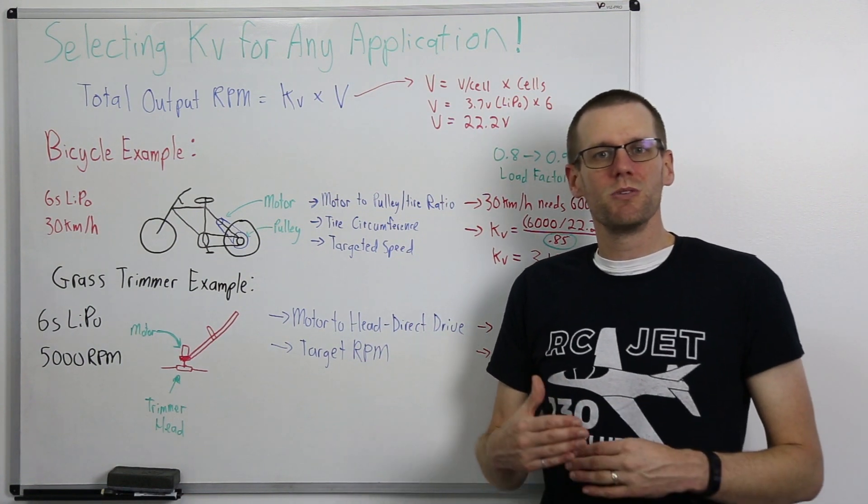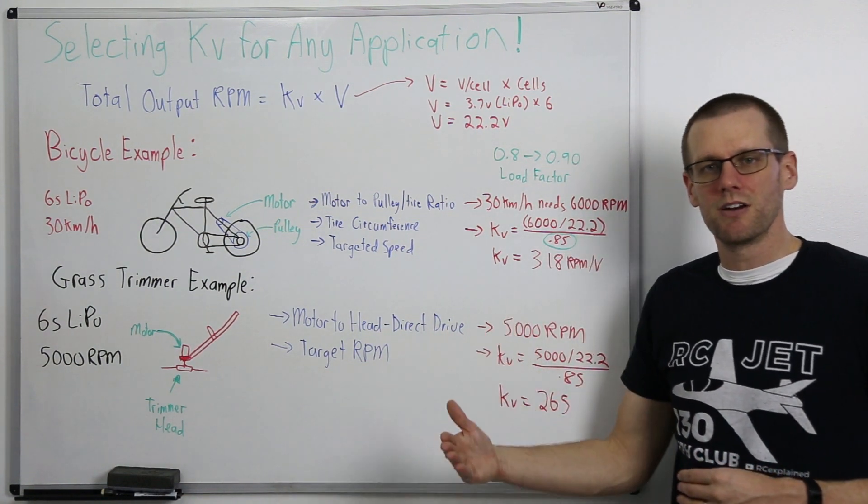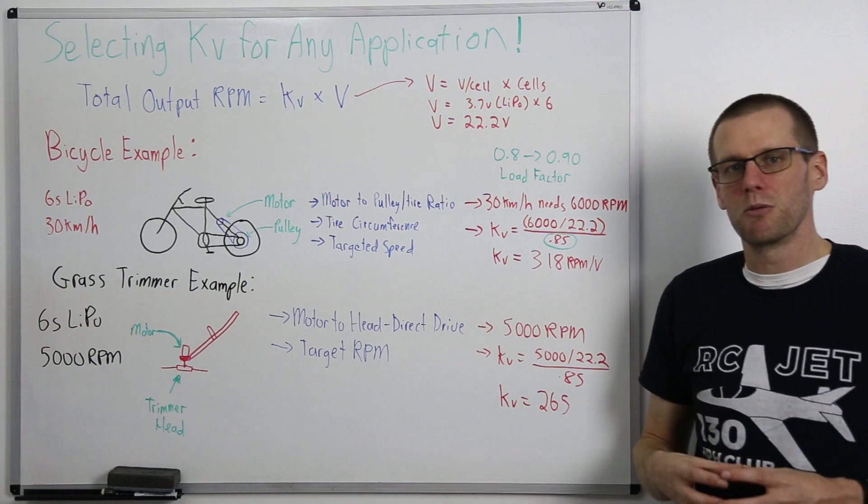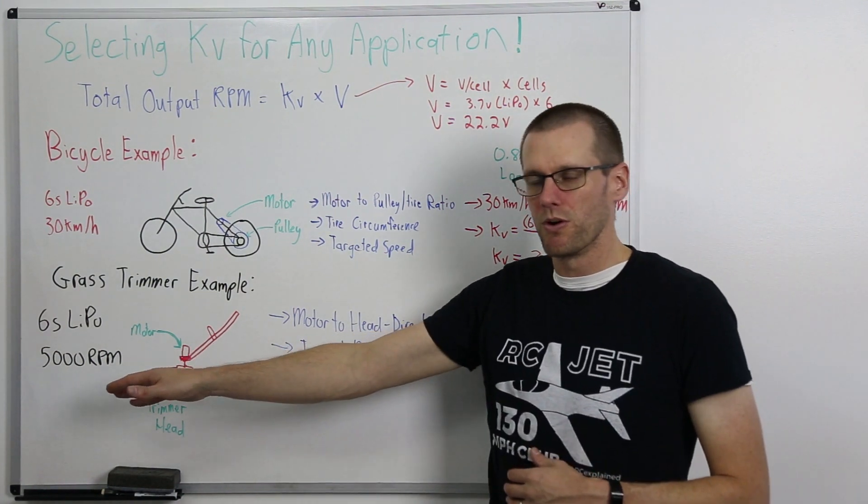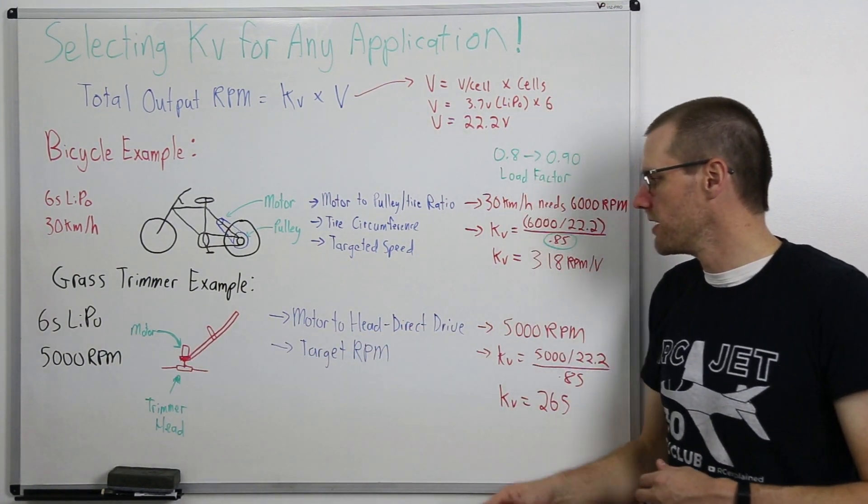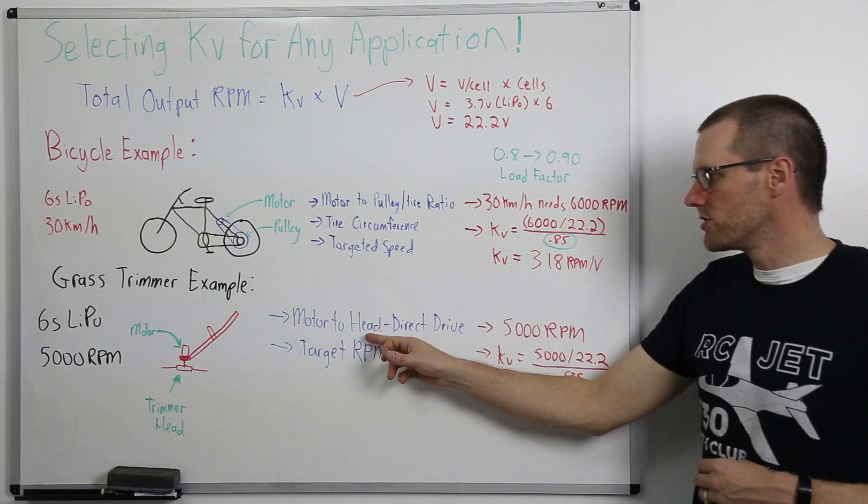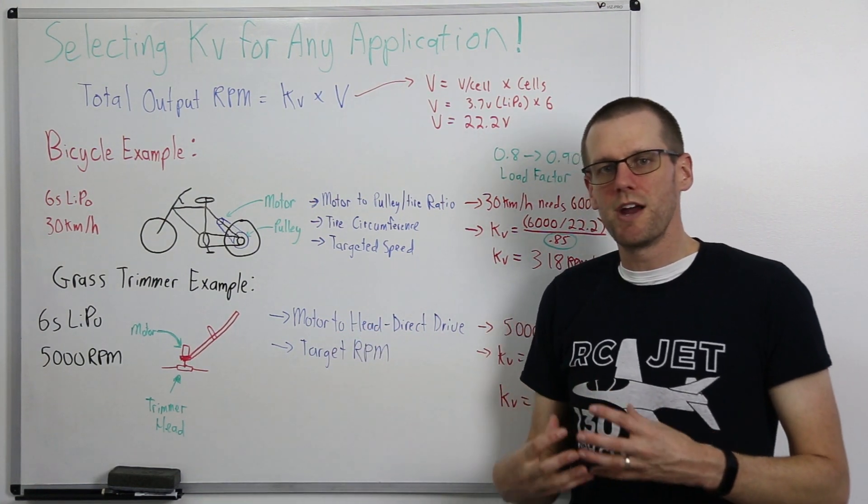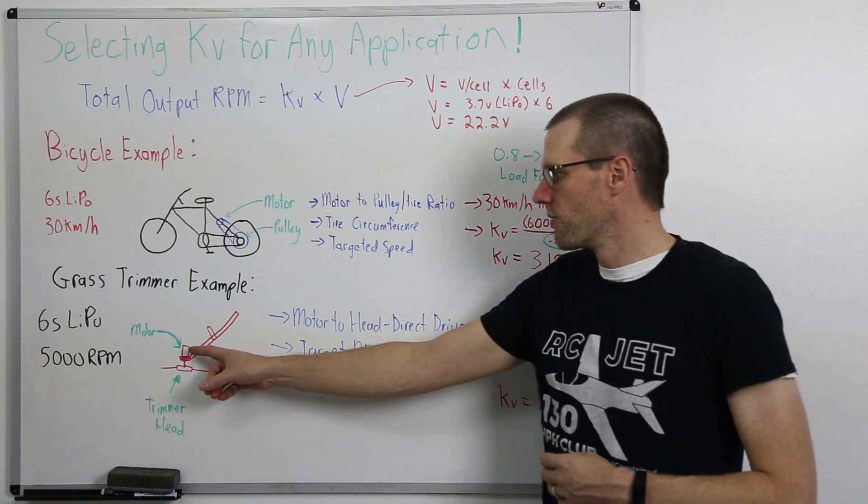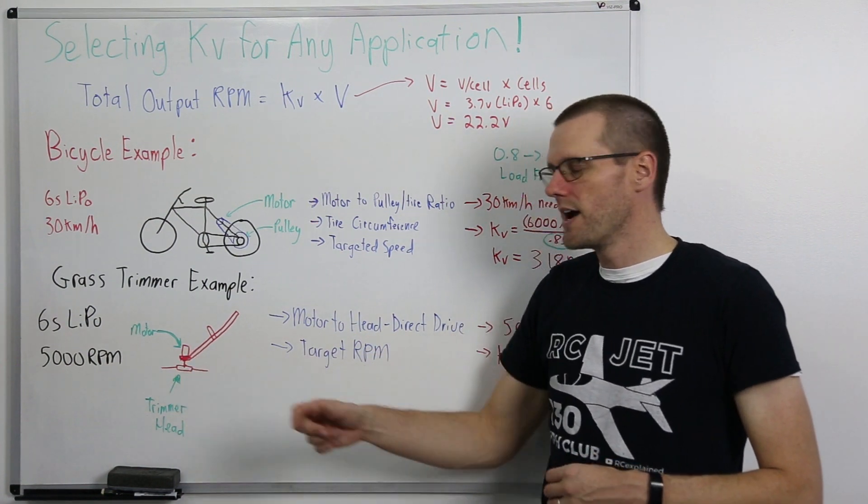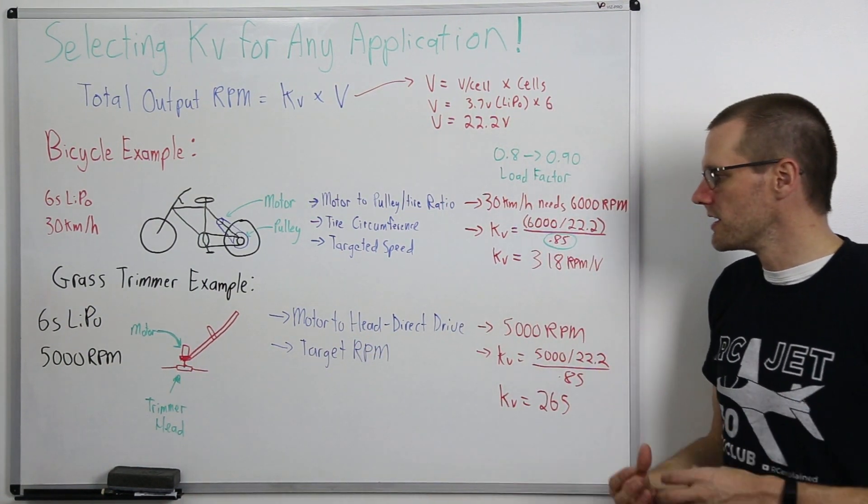So let's choose a value 5,000 rpm sounds good from that range. That's a good place to start. We can always adjust our power systems later down the road but we need a good starting point if we've never done this before. So that 5,000 rpm is going to be a motor to our trimmer head direct drive. We're going to be seeing whatever the motor spins that trimmer head is going to be spinning as well.